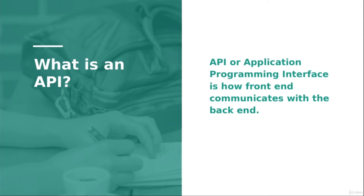An API is how the front end communicates with the back end. A backend developer creates an API, documents it, and gives it to the frontend developer. The frontend developer calls this API hosted on a remote server, sending or getting back data as the backend developer has described in the documentation.